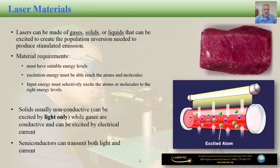Let's shift our attention to laser materials. Inside each laser we have a laser cavity with mirrors on each side and a specific material between them that supports stimulated emission. Materials that can be used as lasing materials come in the shape of a gas, solid, or liquid, and each state of matter can be used to create the population inversion needed for stimulated emission. The most important requirements for laser cavity materials are: they must have suitable energy levels to support population inversion, the excitation energy must be able to reach the atoms and molecules, and the input energy must selectively excite atoms or molecules to the correct energy levels.